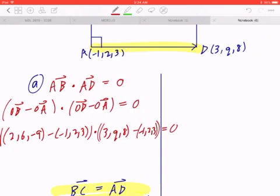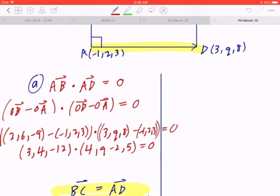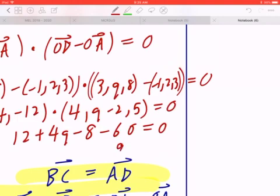When you work this out, 2 minus negative 1 is going to give you 3. 6 minus 2 is going to be 4. Negative 9 minus 3 is going to be negative 12. Dotted into 3 minus negative 1 is going to be 4, Q minus 2, you can copy. 8 minus 3 is going to be 5. And when you take the dot product, 3 times 4 is going to be 12. 4 times Q is going to be 4Q. 4 times negative 2 is going to be negative 8. Negative 12 times 5 is going to be negative 60. And now you can solve for Q. If you bring everything to the right-hand side, that's going to be 12 minus 8 minus 60, which is negative 56. When you bring it over, that's 56 divided by 4. So Q is going to be 14.